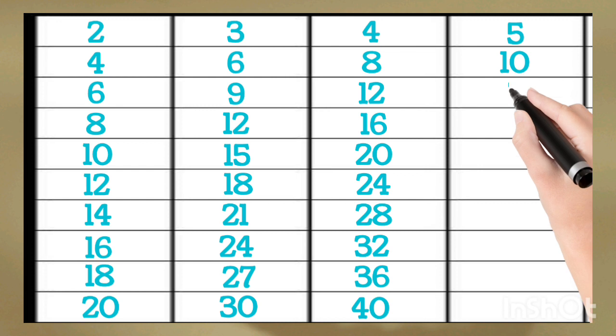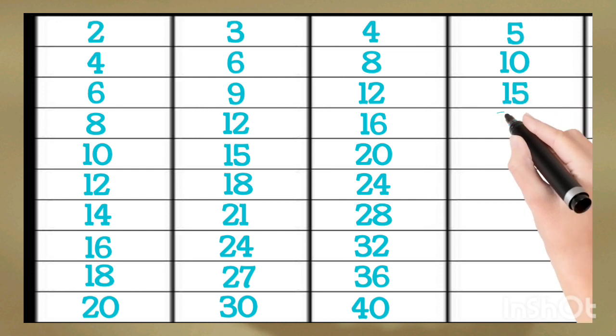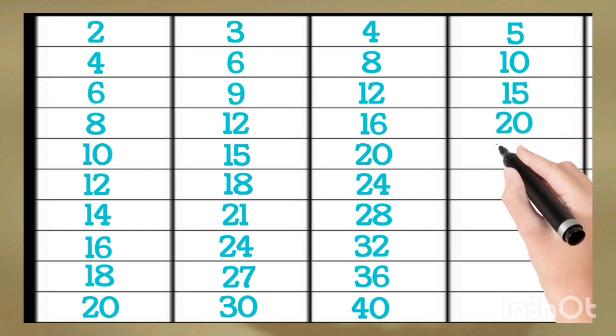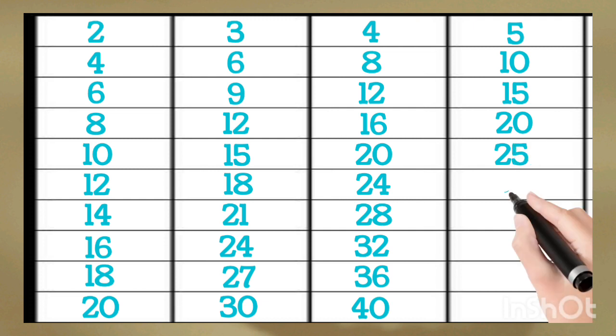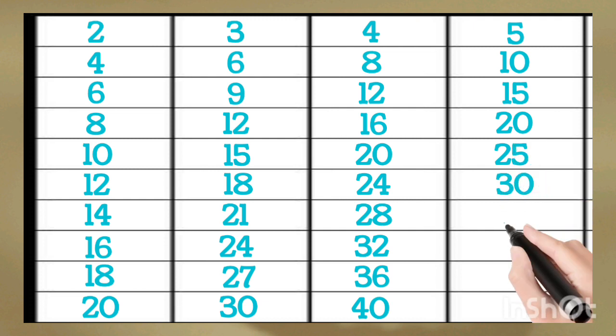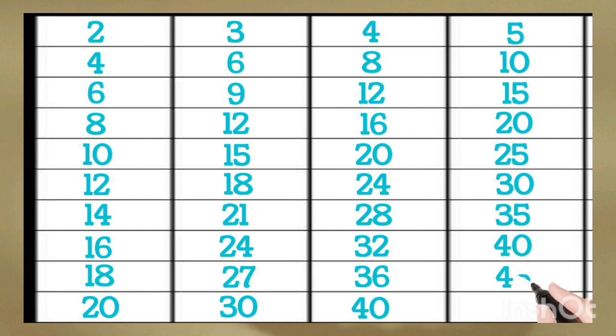5 times 2 is 10, 5 times 3 is 15, 5 times 4 is 20, 5 times 5 is 25, 5 times 6 is 30, 5 times 7 is 35, 5 times 8 is 40, 5 times 9 is 45, 5 times 10 is 50.